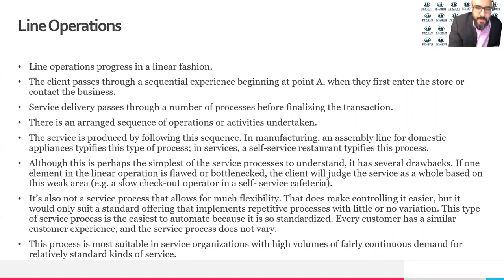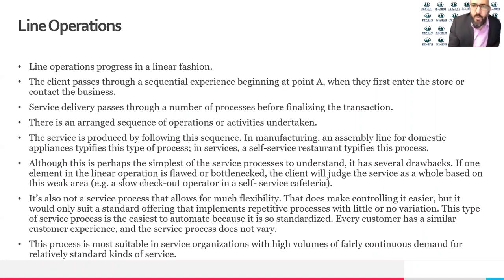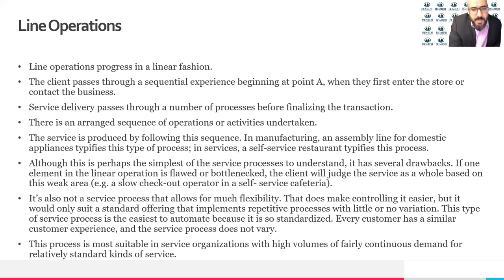The service is produced by following this sequence. In manufacturing, a simple assembly line for domestic appliances is similar — you go from one process to another following the sequence. In the service industry, a self-service restaurant is an example of this process. Although it is the simplest of the process types to understand, it has several drawbacks.